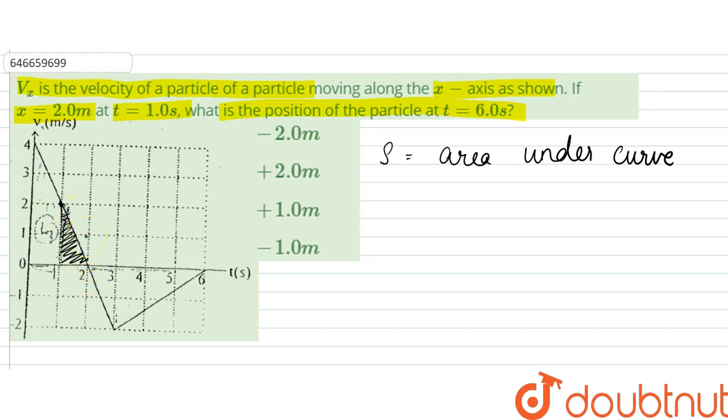The area for this, let it be s2. So s2 distance would be equal to half into (2 minus 1) into 2, so that would be equal to 1 meter. So there would be an increase of 1 meter, plus 1.